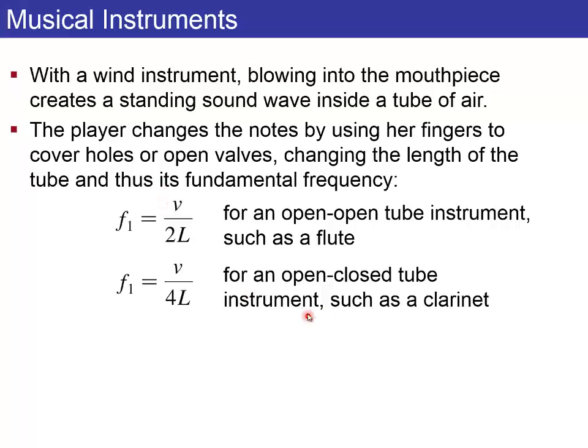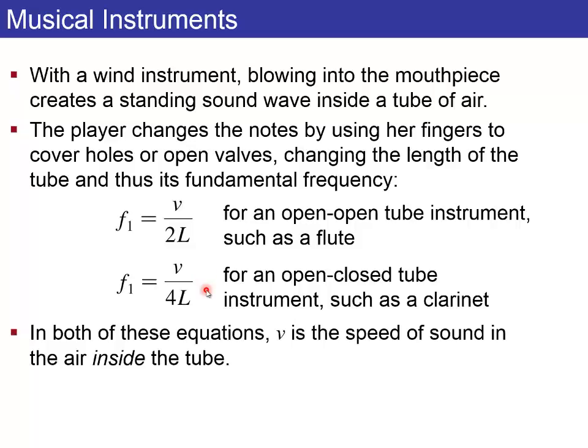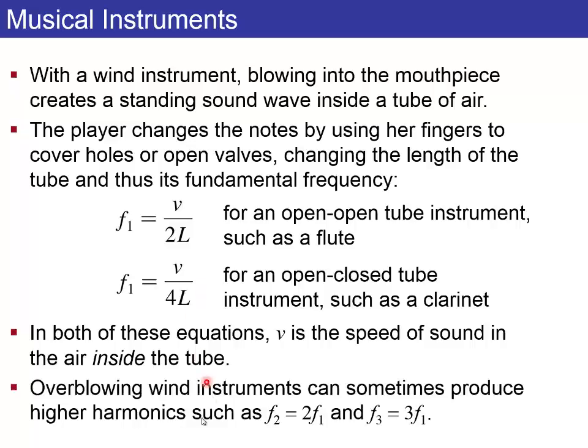And if you have an open closed instrument, such as a clarinet, you end up with a fundamental frequency that's half as much. This is why clarinets sound lower than flutes, sort of go to a lower octave, even though they're about the same length. And you can also overblow wind instruments to actually get the higher harmonics where you have a node in the middle. So you can get 2F or 3F. Each of these correspond to a higher frequency by some integer multiple.